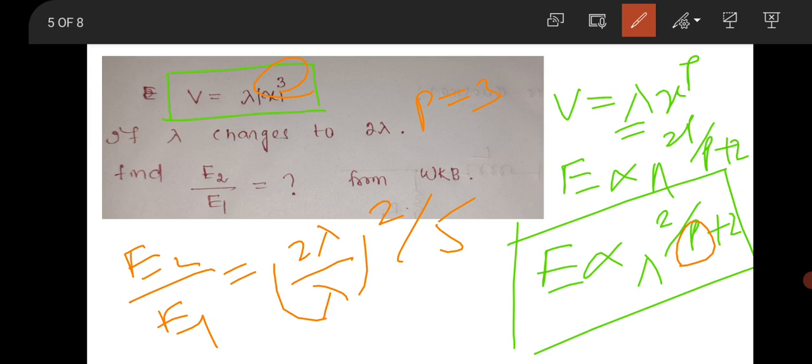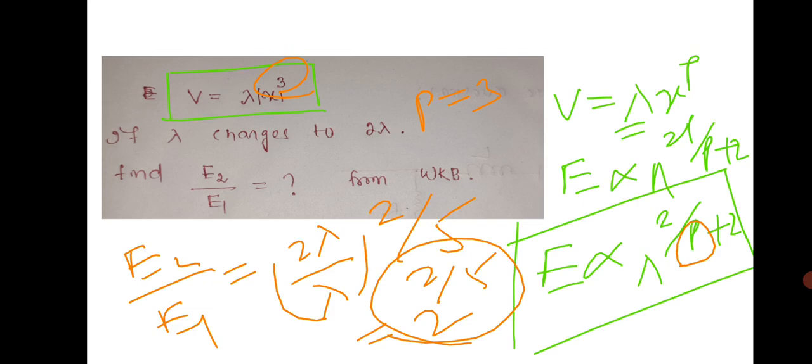Here p is the power of x, which is 3, so it will be 2/5. Finally it will be 2 to the power 2/5. But you have to calculate this numerical value because the option was not in the power of 2. Hope you have done this question in the examination.